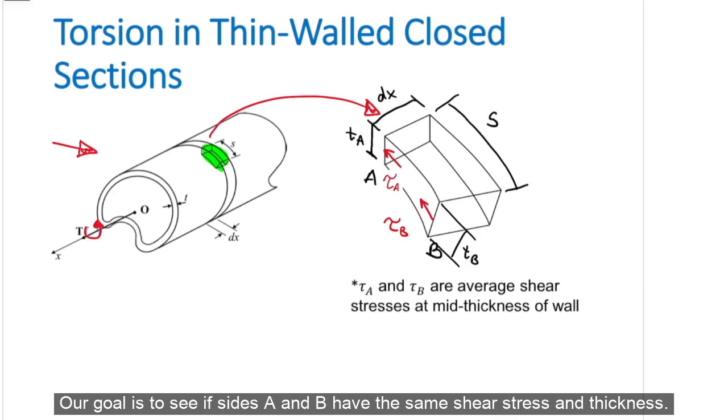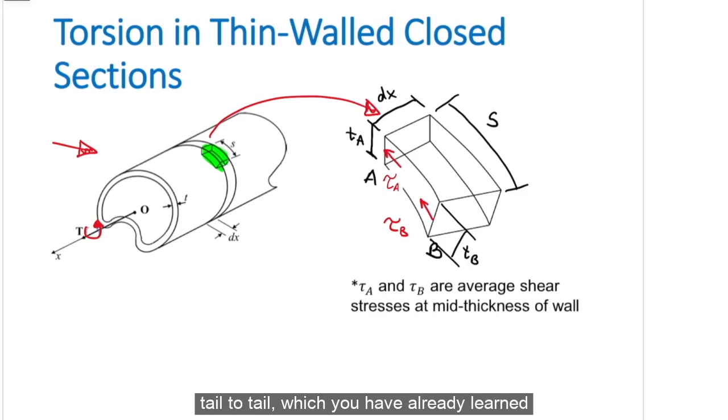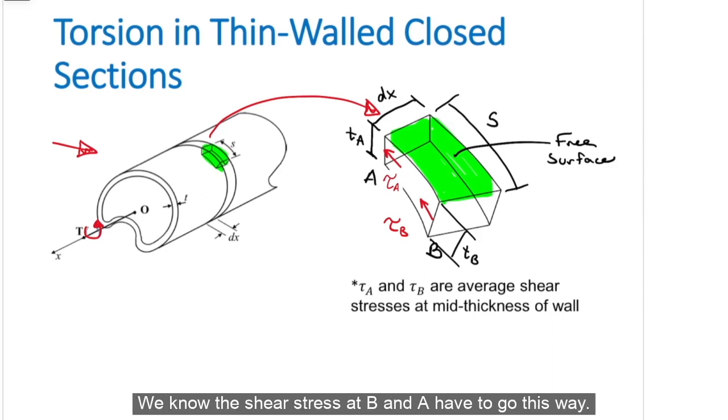Our goal is to see if sides A and B have the same shear stress and thickness. Remember, these shear stresses have to be set up in either tip-to-tip or tail-to-tail, which you have already learned why in the past torsion videos. Note that this is the free surface of the shape, so using what we learned in the previous videos, we know the shear stress at B and A have to go this way.